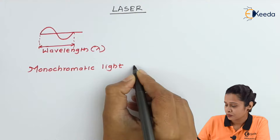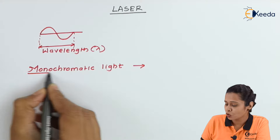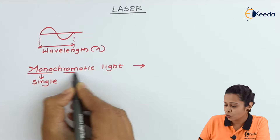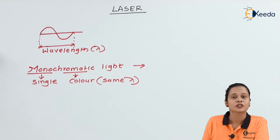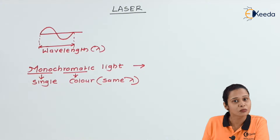Monochromatic means lambda should be the same. Mono means single, chromatic means color. So single color means same lambda. This type of light rays is called monochromatic light, or the source is called a monochromatic source of light.